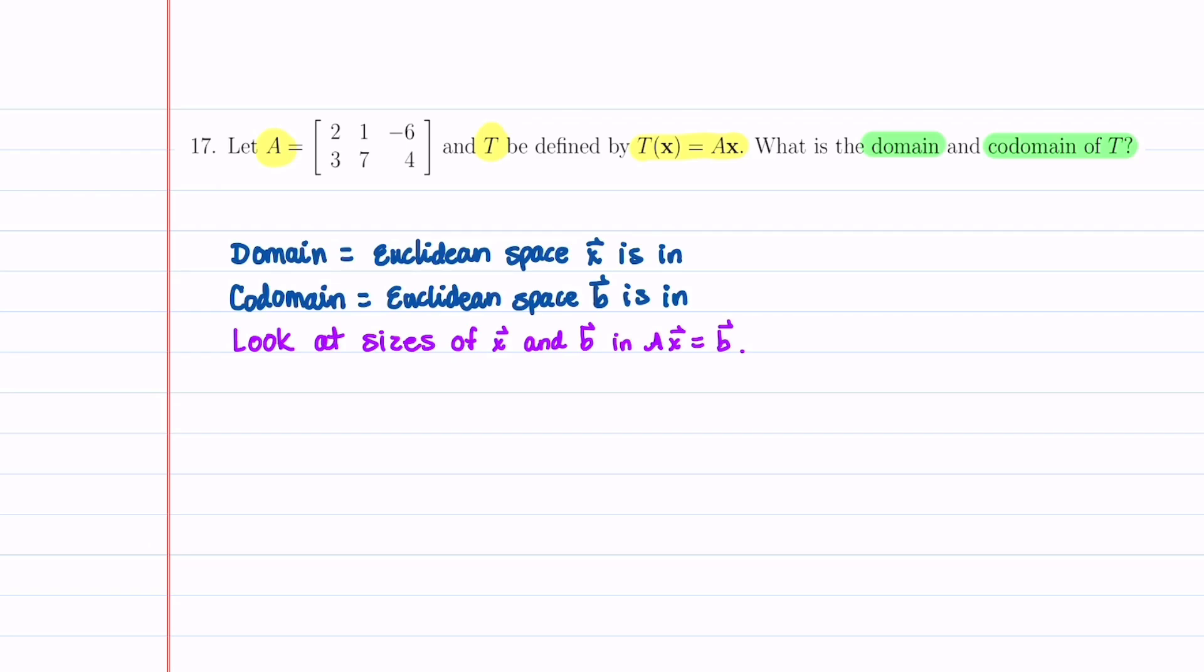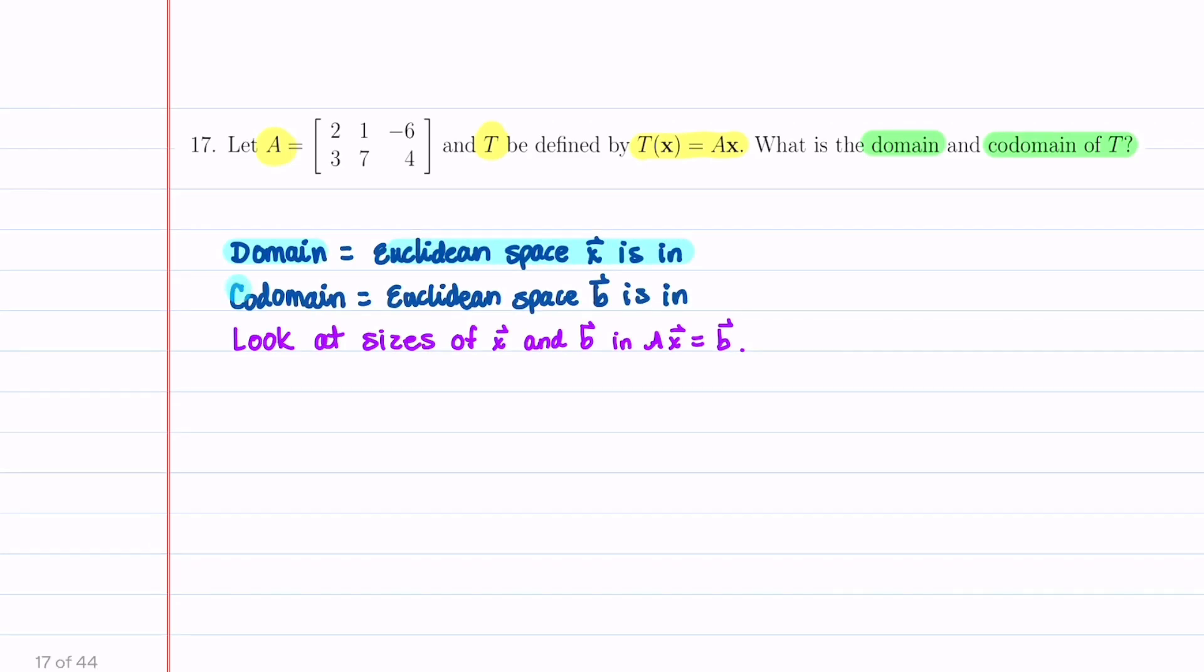To answer this question, we first have to understand what the domain and the codomain is. The domain is the Euclidean space X is in, and then the codomain is the Euclidean space that B is in.